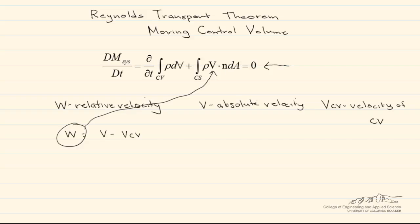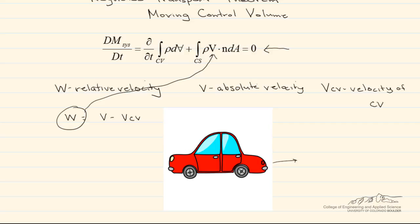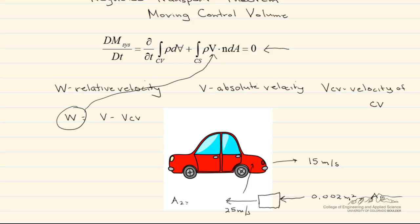Let's look at an example. We have a car moving at 15 meters per second, and inside it has an engine. The engine has an intake area of 0.002 meters squared. The exhaust exits the engine at 25 meters per second, and its area — we'll call this area 2 — is equal to area 1, which is 0.0014 meters squared.